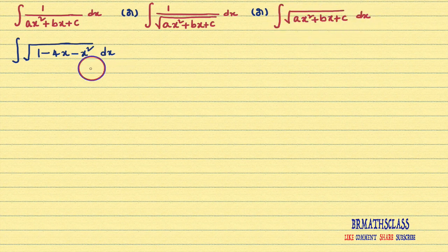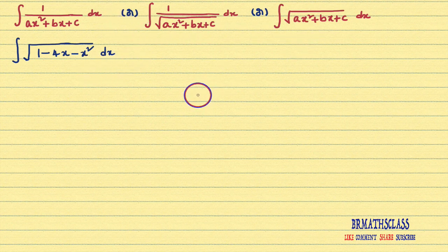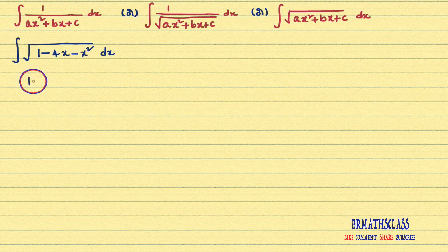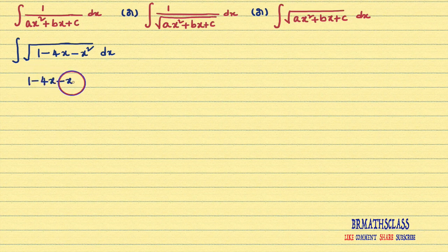If the given integral is any one of these three forms, the procedure is same. What is that procedure? First, we will consider the expression ax² + bx + c. In this problem, that expression is 1 minus 4x minus x².